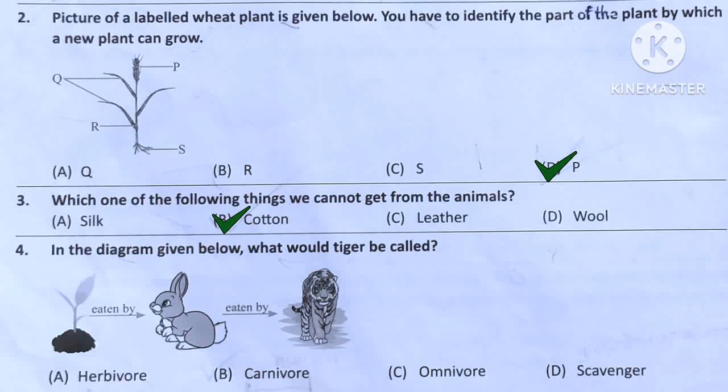The picture is showing that rabbit eats plant, then tiger eats the flesh of rabbit. So rabbit is a herbivore and tiger is a carnivore. The answer is Option B.